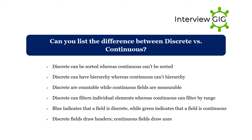Discrete can be sorted whereas continuous cannot be sorted. Discrete can have a hierarchy whereas continuous cannot. Discrete fields are countable while continuous fields are measurable. Discrete can filter individual elements whereas continuous can filter by range. Blue indicates that a field is discrete while green indicates that a field is continuous. Discrete fields draw headers; continuous fields draw axes.